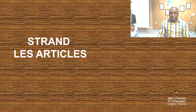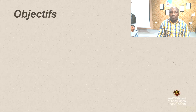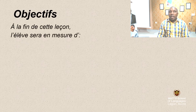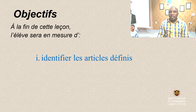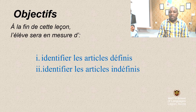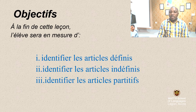First, we are going to study the objectives of the lesson. At the end of this lesson, the student will be able to identify the definite articles, identify the indefinite articles, and identify the partitive articles.